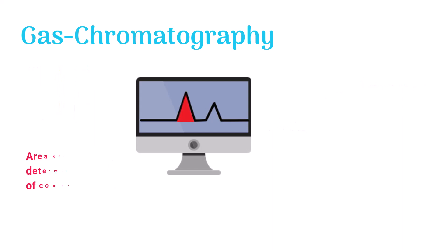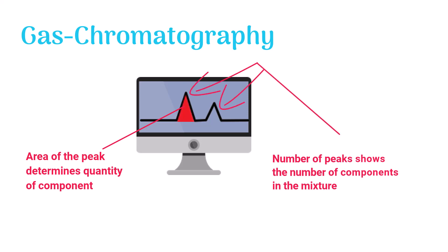Area of the peak determines the quantity of that sample component in the mixture. The number of peaks shows how many components or types of sample molecules are present in the mixture.